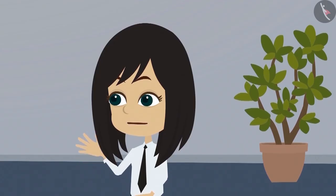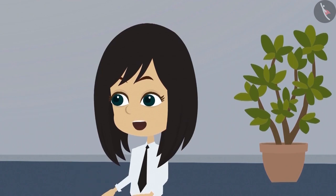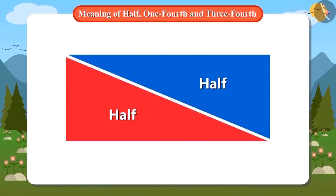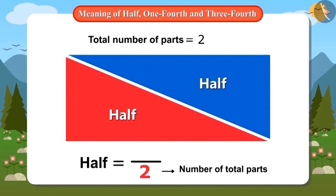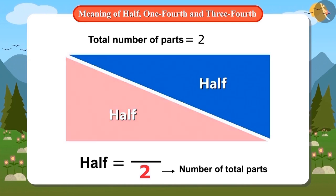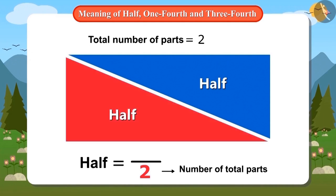Yes, ma'am. But ma'am, how to write it as a number? Very easy. First we will see how many parts of the whole object are there. There are a total of two parts of this entire rectangle. Yes. And we will draw a line to show it and write two below it. Now tell me, how many of these two parts will be called half?